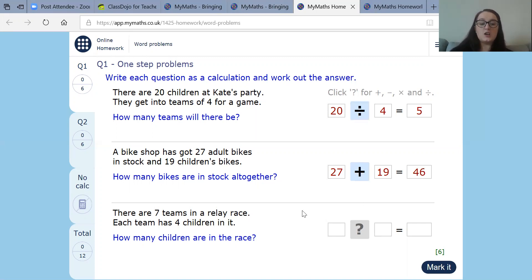Now the next one. There are seven teams in a relay race. Right, let's put seven there. And each team has four children in it. There we go. How many children are in the race? So this looks like it is a multiplication question. So let's put the multiplication sign there. Now we are looking at seven times four. And we don't know our seven times table, which is fine, but we can do it with our four times table. So let's try that. So four, eight, 12, 16, 20, 24, 28. My answer should be 28. Let's have a look. Let's mark them. Super.